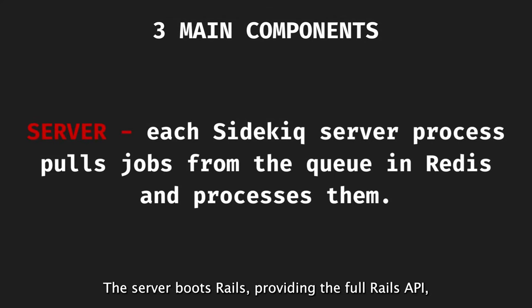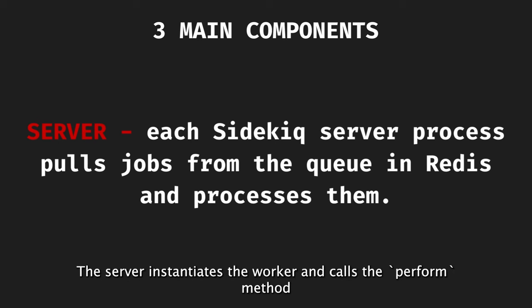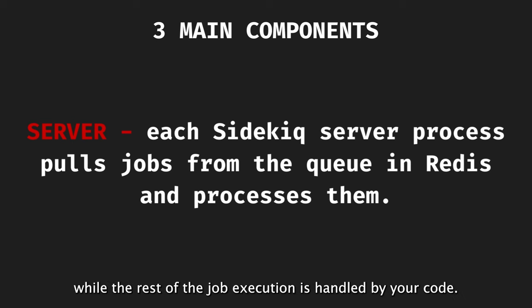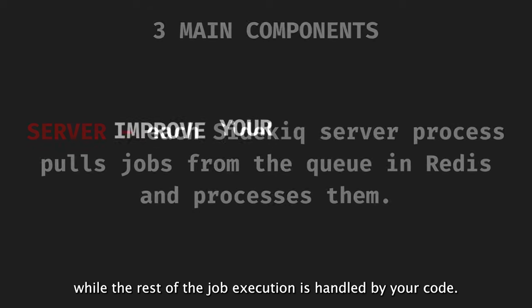The server boots Rails, providing the full Rails API including ActiveRecord, for use in jobs and workers. The server instantiates the worker and calls the perform method with the provided arguments, while the rest of the job execution is handled by your code.